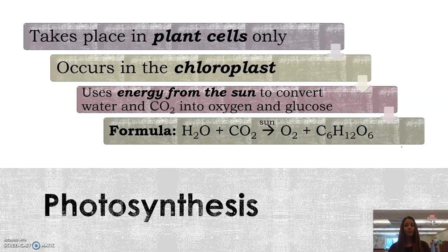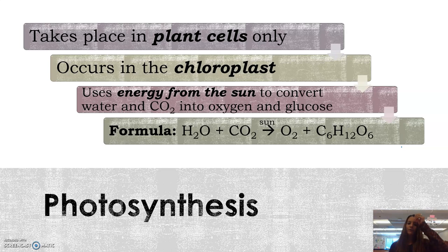Hi everybody, welcome to a general overview of photosynthesis and cell respiration. First we're going to get into photosynthesis. You should know that photosynthesis takes place in plant cells only and it occurs in an organelle called the chloroplast. It uses energy from the sun and then that helps convert water and carbon dioxide into oxygen and glucose which the plant uses. The formula is below: H2O plus CO2 yields, with sunlight, O2 and C6H12O6, which is glucose.